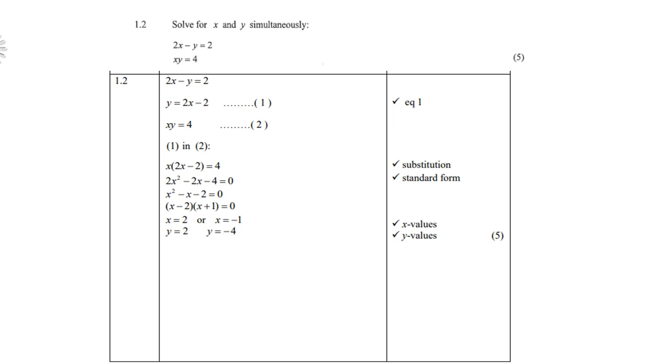So therefore y = 2x - 2. Substitute equation 1 into equation 2, so you get x times (2x - 2) = 4. Remove the brackets, substitute, write in standard form, and factorize or use the formula. (x - 2)(x + 1) = 0, therefore x = 2 or x = -1. Substitute these two values into equation 1 to give you the y values: y = 2 or y = -4.